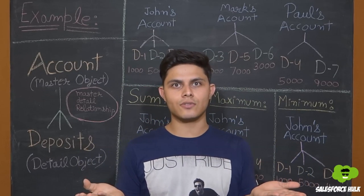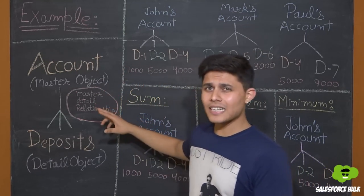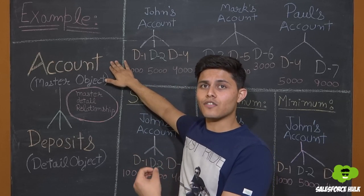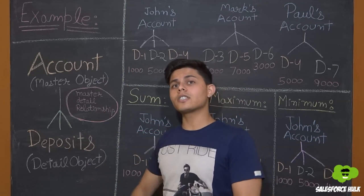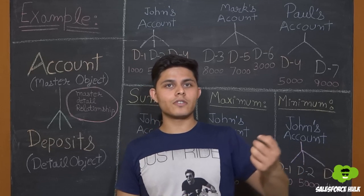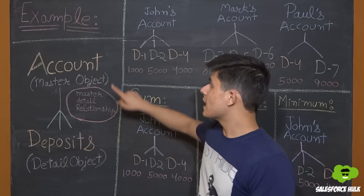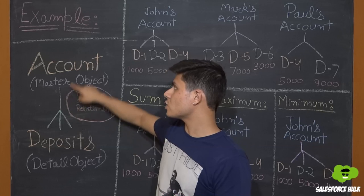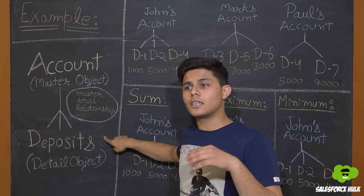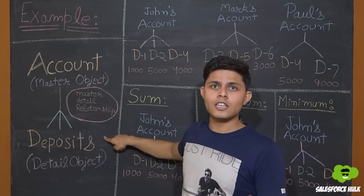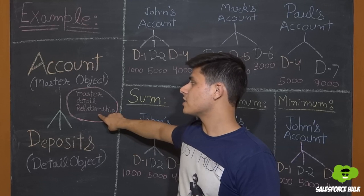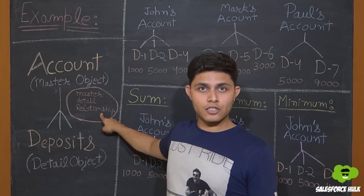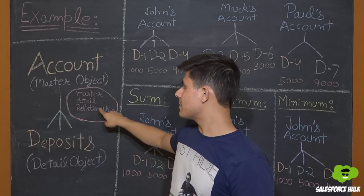Here is an example. There are two objects in our org. One is Account — think of it as a Bank Account storing information about a person's account. The other is Deposits, storing the amount deposited into a particular account. A single Bank Account can have multiple deposits, so Account is on the one side and Deposit is on the many side. This relationship is a Master-Detail Relationship, because Rollup Summary Fields can only be created on the master record in a Master-Detail Relationship.